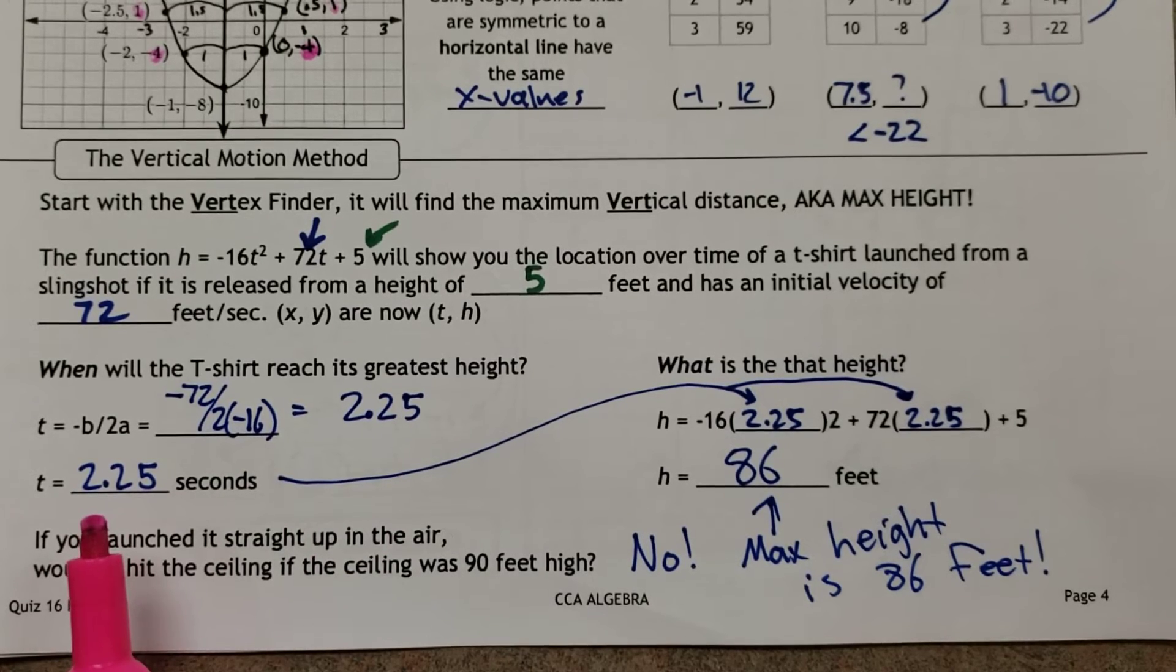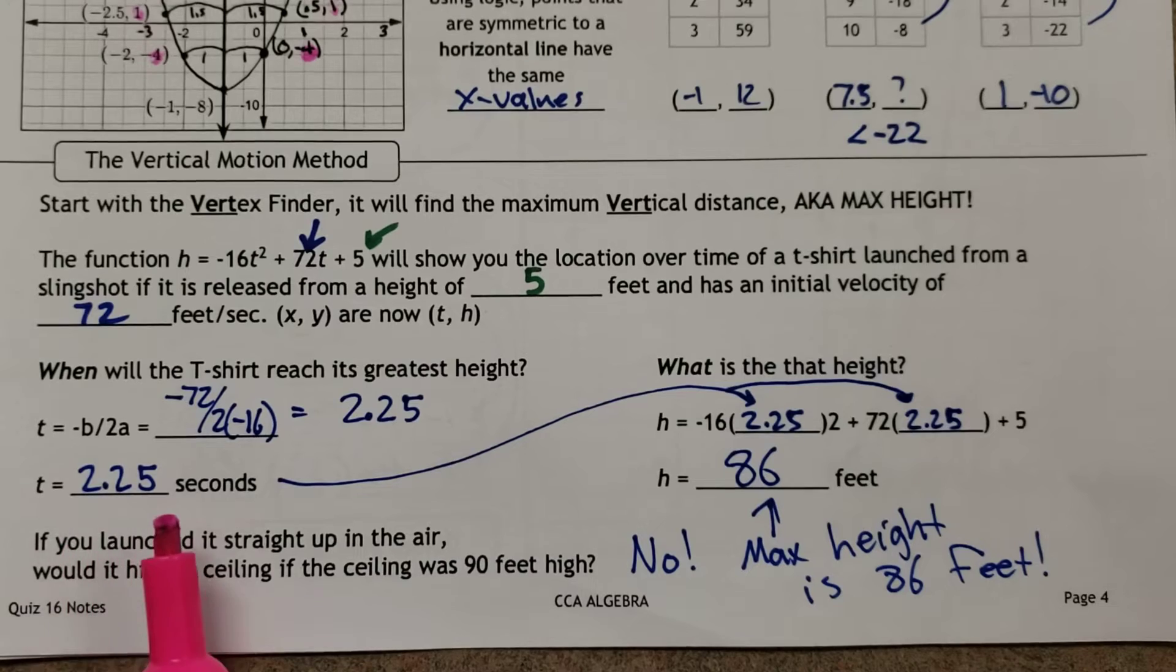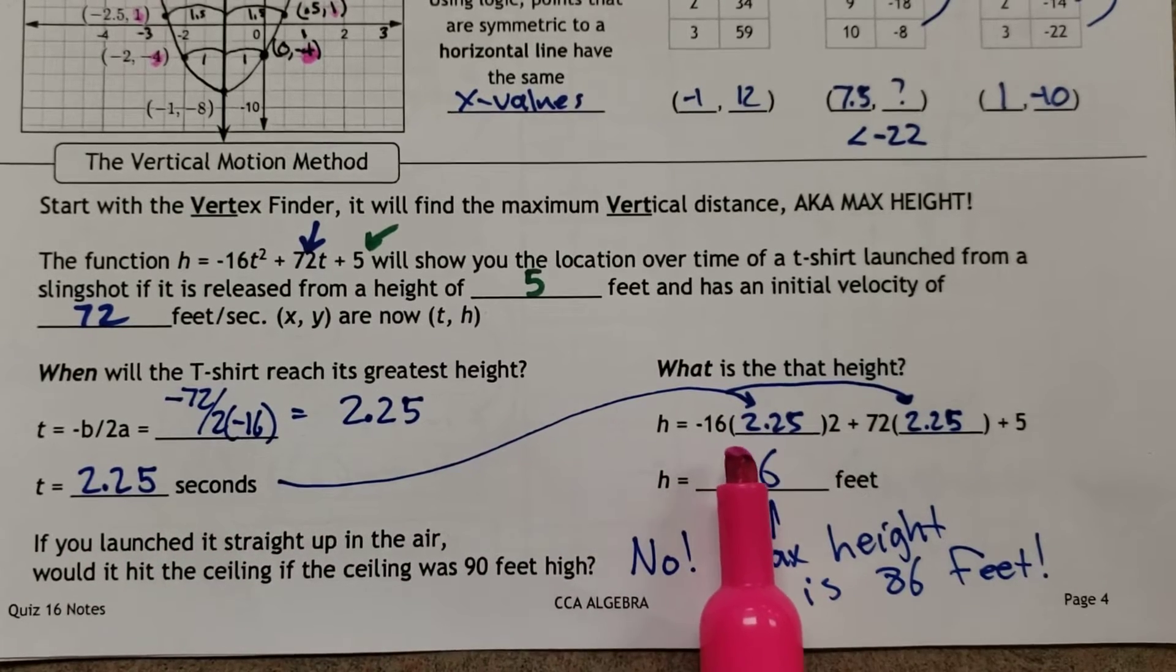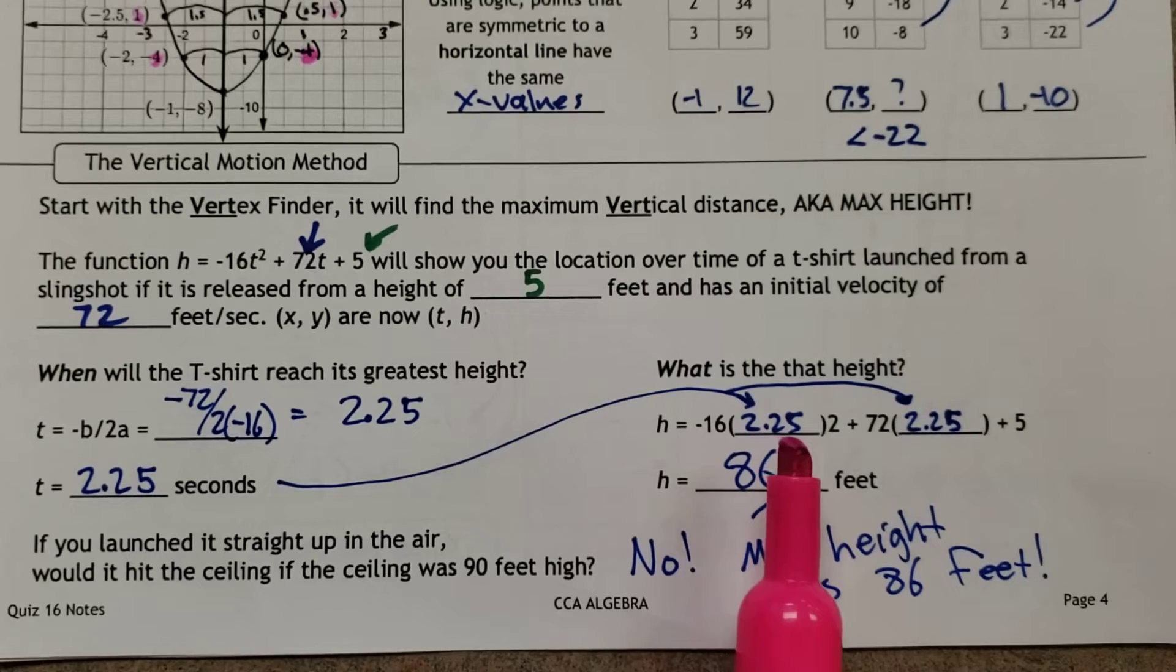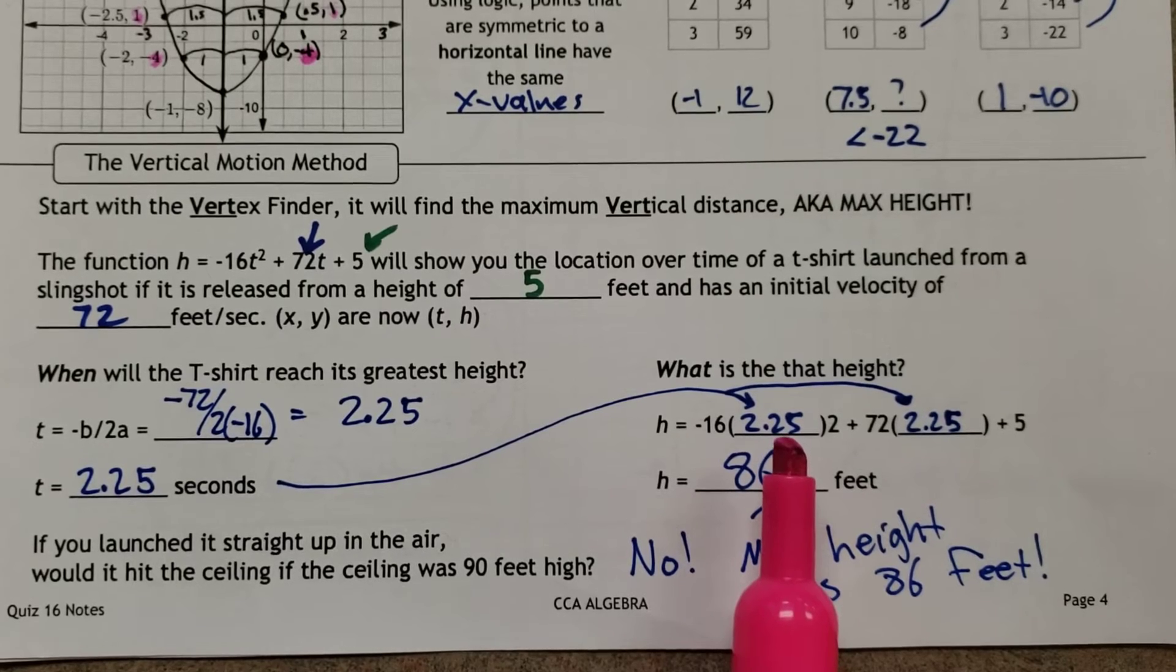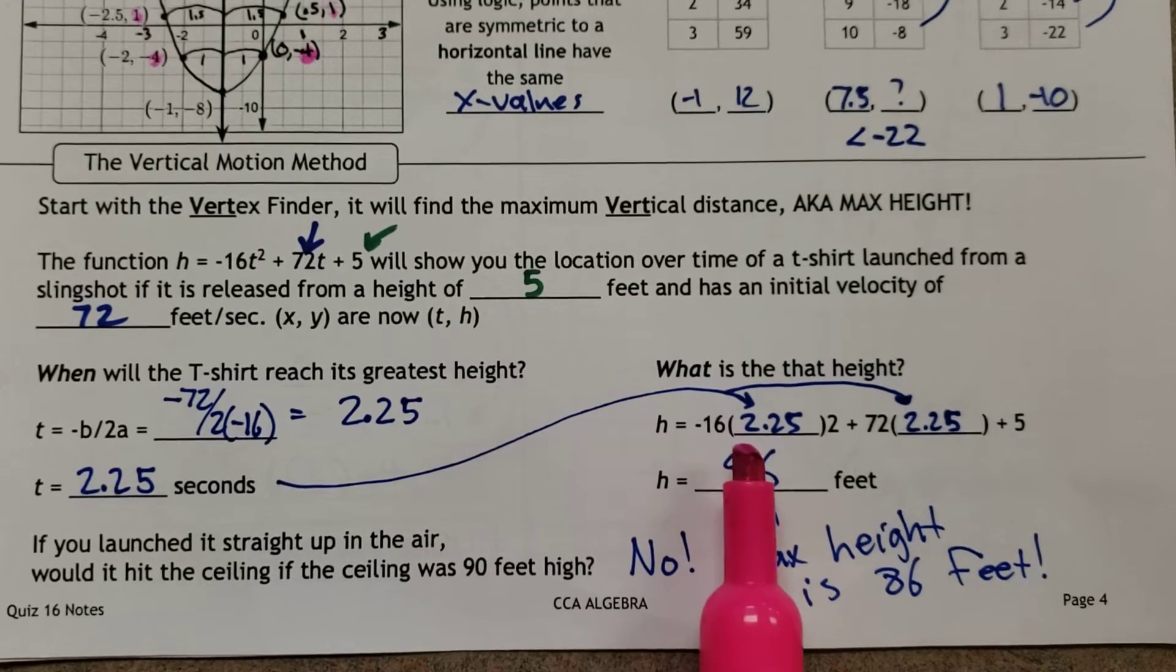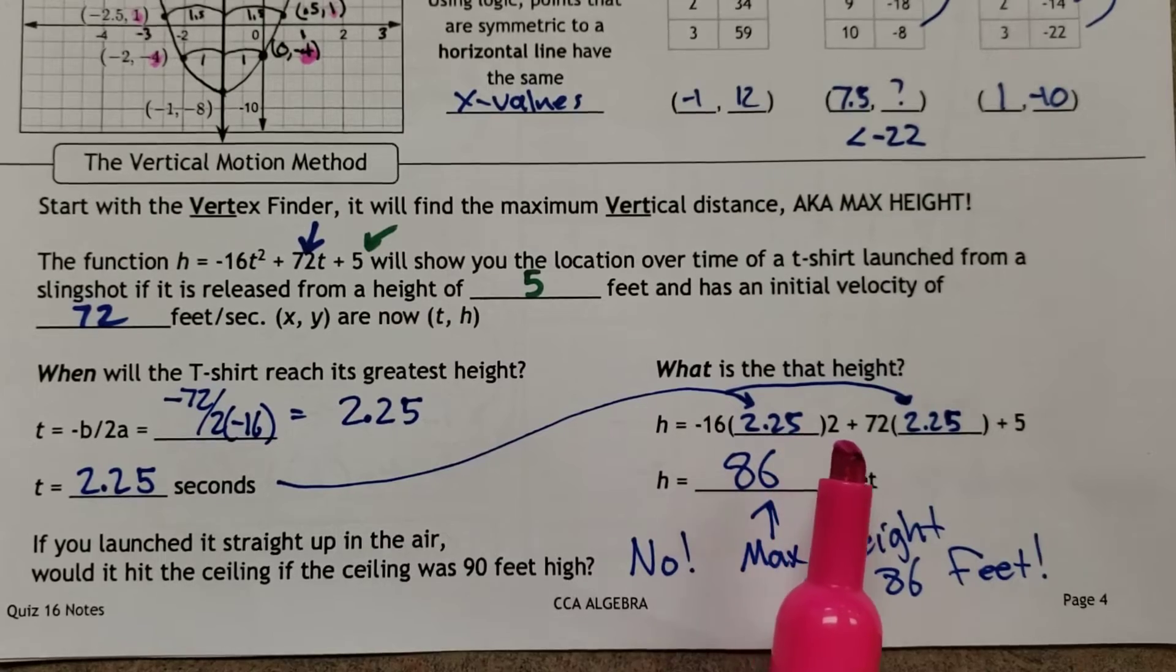So we plug 2.25 back into the equation. This is going to take some time. Double check, triple check, and then check again. When you calculate these gravity functions, -16 times 2.25 squared - oops, that should be a square, typo - that should be a square.